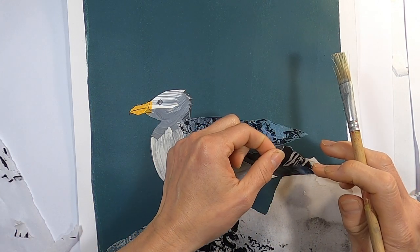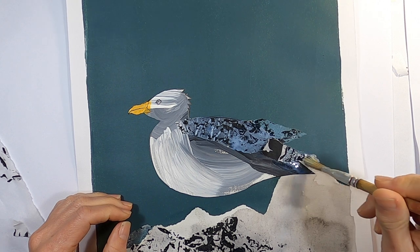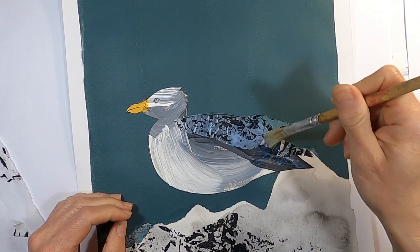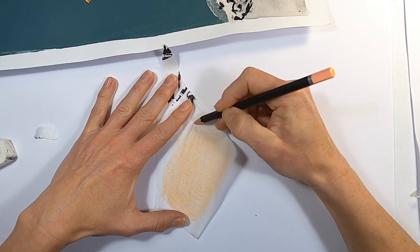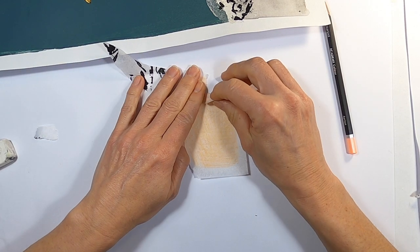Use the leftover pieces of tissue to tear some feather shapes, and add them as a feature to the bird's wings. For the legs of this bird I coloured in a scrap of white tissue paper with a coloured pencil, and tore it into leg shapes.